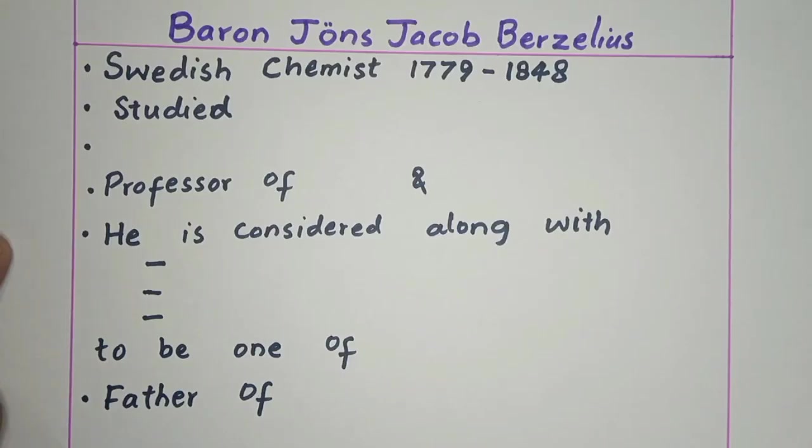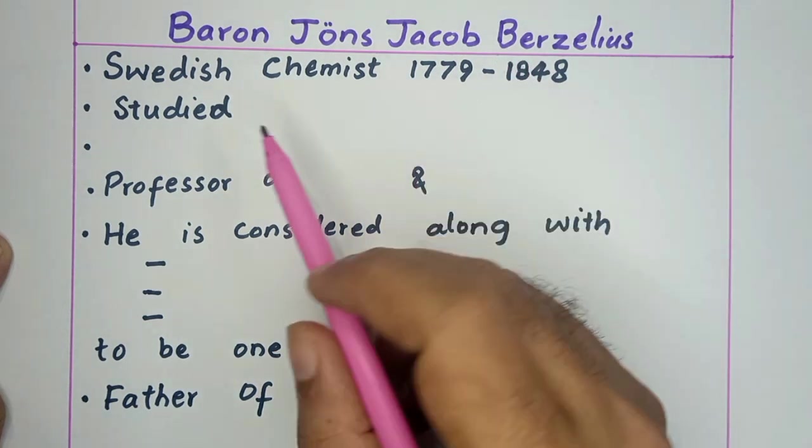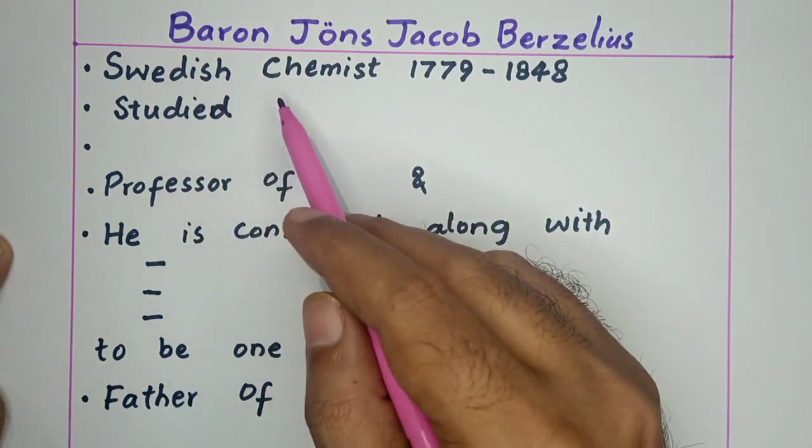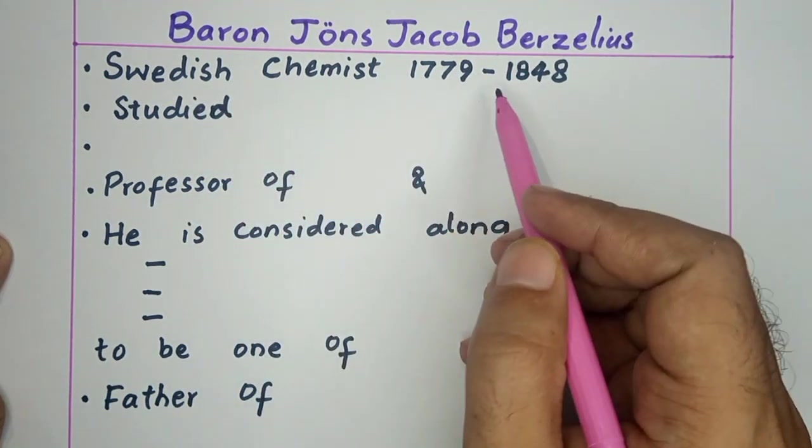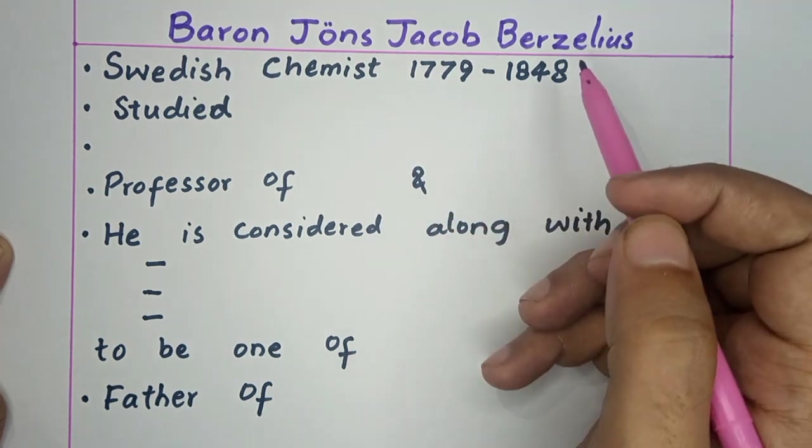Asalaam alaykum students, in today's video we will talk about a great scientist, Baron Jöns Jacob Berzelius. He was a Swedish chemist and his life span is 1779 to 1848.